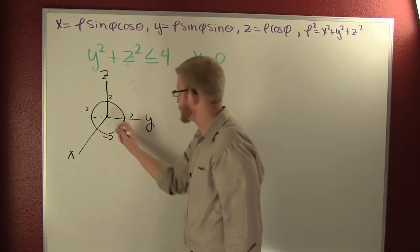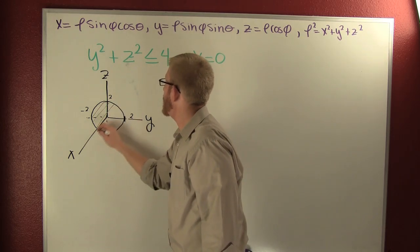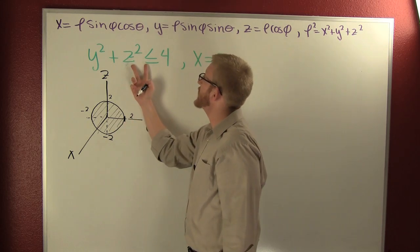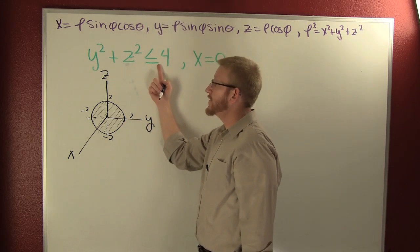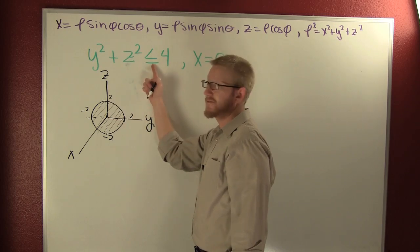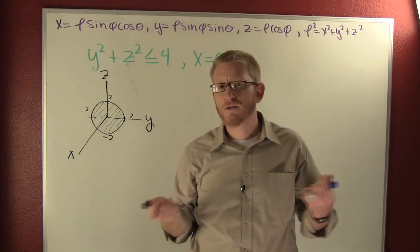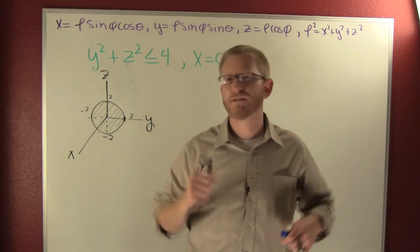So what we're going to have here is a solid disk. A solid disk. And it includes the endpoints because v equals 2. So now that we've drawn it in rectangular, our goals and objectives were to describe it spherically.